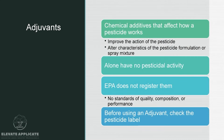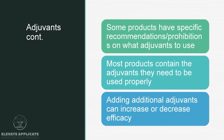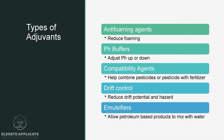Adjuvants are chemical additives that affect how a pesticide works. They can improve the action of a pesticide or alter the characteristics of a formulation or spray mixture. Alone, they have no pesticidal activity. The EPA does not register them, meaning there are no standards of quality, composition, or performance for adjuvants. Before using an adjuvant, check the pesticide label — some labels say you can't use certain ones or recommend specific ones. Most products already contain adjuvants, so you may not need to add more. Adjuvants can increase or decrease the efficacy of an application.